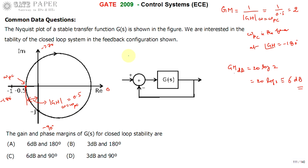Now we calculate the phase margin. Phase margin is the margin in phase at the gain crossover frequency. First, we must calculate pi, which is the angle of GH at omega equals omega GC, where omega GC is the gain crossover frequency.